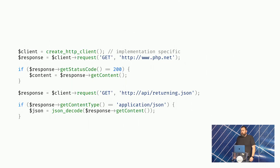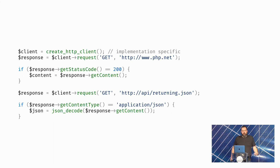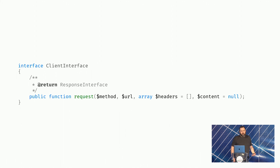The interface itself was relatively simple at the time. There was no constructor defined or anything like that. The only thing there for the interface was the request method, and the request method at the time took the method, the URL, some headers, and some content. So how you created the client was kind of up to you, but everybody could assume that this function would work as expected.